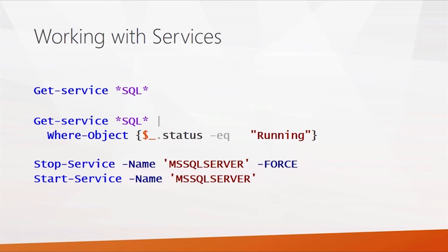Now let's talk about working with services. You can list the various services by using the Get-Service command. The first example lists all service names that have the letters SQL in them, which will list all of our SQL services. If you want to see just the ones that are running, the second command filters by looking at the status of those objects and picking out just the running ones.